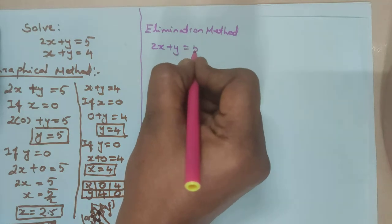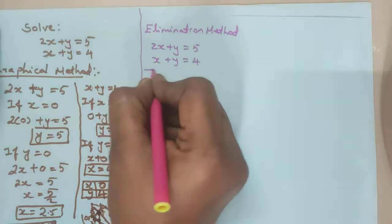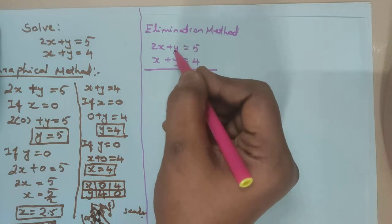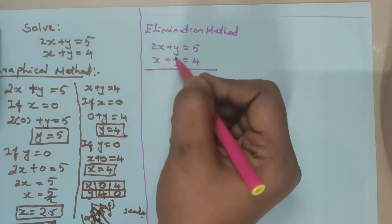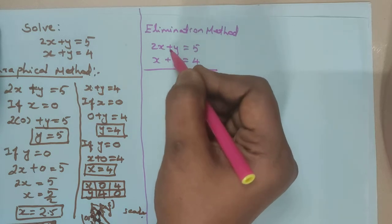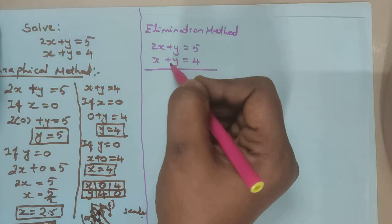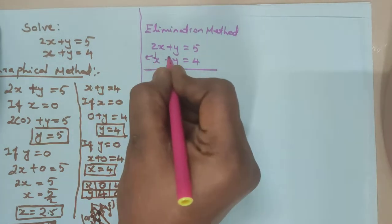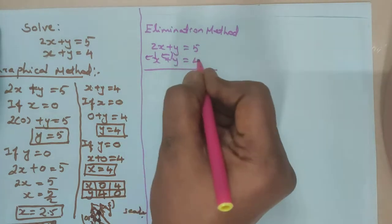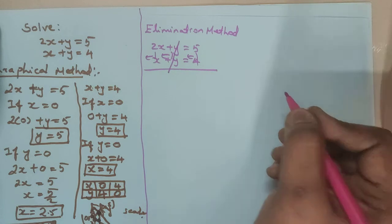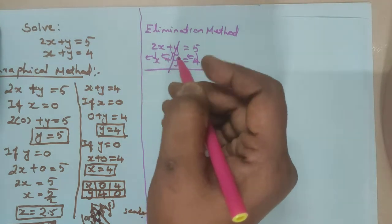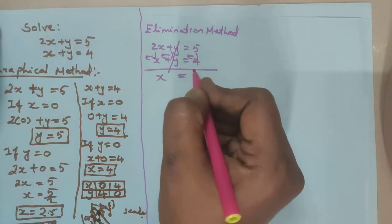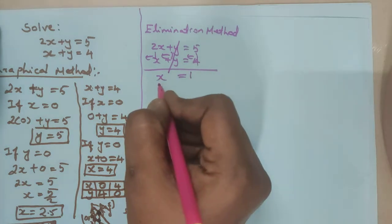Let me write the equations: 2x plus y is equal to 5, and x plus y is equal to 4. Check the equations — 2x and x can't be cancelled, but y and y can be cancelled. Both y terms are positive, so they can't cancel directly. Change the sign of the second equation: plus becomes minus. So 2x minus x gives 1x, which is x. And 5 minus 4 is 1. So x is equal to 1.